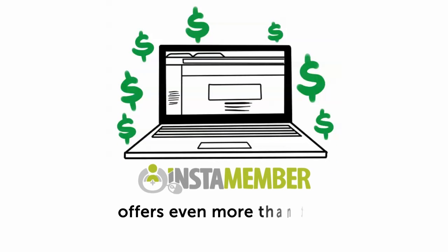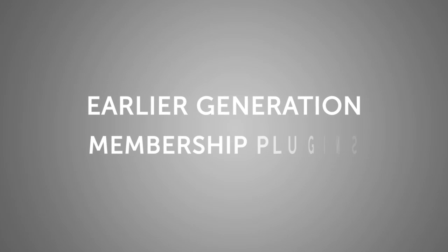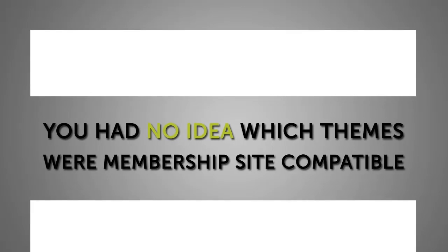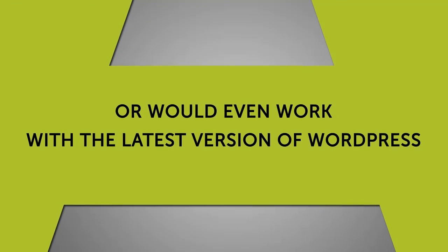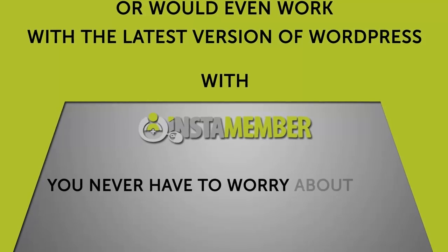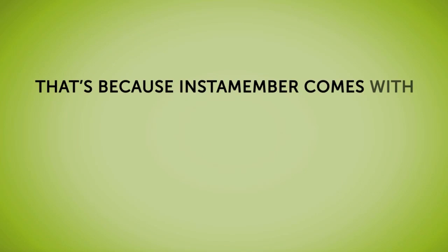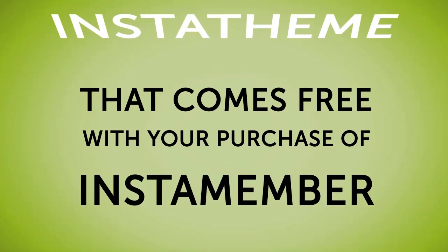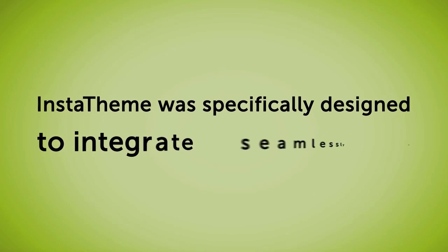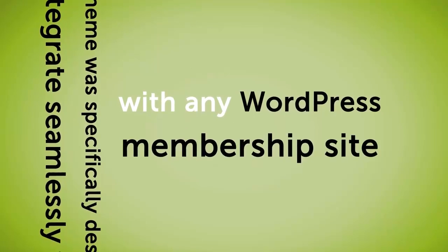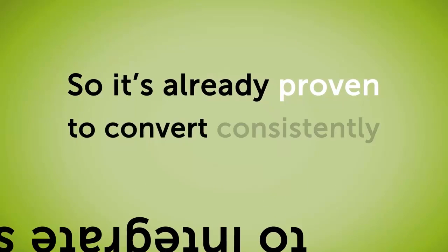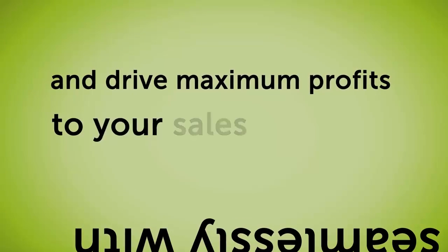But InstaMember offers even more than that. Earlier generation membership plugins either didn't offer any membership theme or forced you to choose from among thousands of WordPress themes, with no idea which were membership site compatible or would work with the latest version of WordPress. With InstaMember, you never have to worry about that — because InstaMember comes with InstaTheme, the proprietary membership theme that comes free with your purchase. InstaTheme was specifically designed to integrate seamlessly with any WordPress membership site, built to the exact specifications of InstaMember's beta testers, so it's already proven to convert consistently and drive maximum profits to your sales platform.